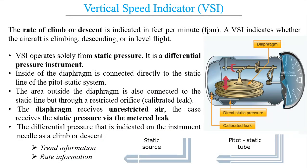Moving on to the vertical speed indicator (VSI) — it is similar to the airspeed indicator but provides readings in the vertical direction, though the functioning differs. The vertical speed indicator provides the rate of climb or descent in feet per minute. It indicates whether the aircraft is climbing, descending, or in level flight. VSI is also known as VVI — vertical velocity indicator.